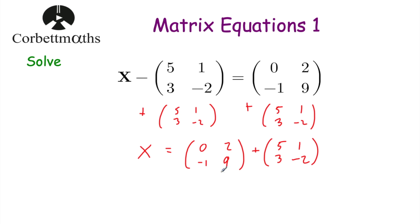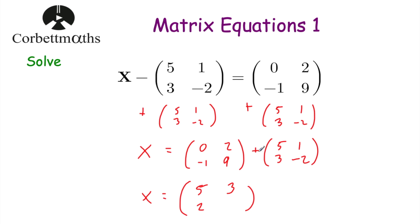On the left-hand side we added this matrix to get rid of this matrix so we're just left with x. On the right-hand side we had the matrix [0, 2, -1, 9] and we're going to be adding the matrix [5, 1, 3, -2]. To add matrices together we just add the corresponding elements, so 0+5=5, 2+1=3, -1+3=2, and 9+(-2)=7. So x is equal to [5, 3, 2, 7] and we've solved that equation.